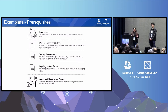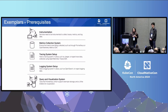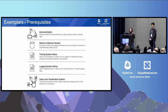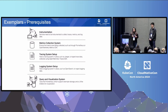Now let's talk about what prerequisites you'll need to set up exemplars for your service. The first and most important thing is instrumentation — you'll have to instrument your service to collect metrics, traces, and logs. You'll need a metrics collection system; you can use the OpenTelemetry metrics SDK to collect, process, and export metrics, and store them in Prometheus. You'll need a tracing system — similarly, you can use the OpenTelemetry traces SDK to collect and export traces, and store them in Jaeger. For logging, you can use OpenSearch. And finally, you need a visualization system — Grafana and Prometheus are great tools for this; they both offer it out of the box.